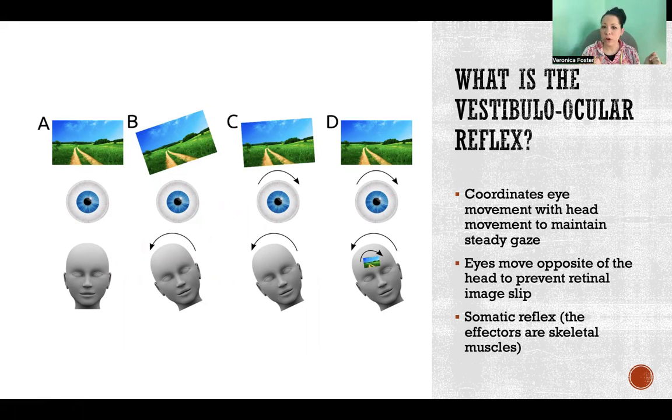For example, if I turn my head to the right and I'm trying to maintain focus on my computer screen while I'm talking to you, my eyes have to move to the left to make up for that motion so that I can maintain the image that I'm trying to keep on my retina in the correct spot. It helps prevent retinal image slip so that we can maintain focus regardless of how we move our heads.